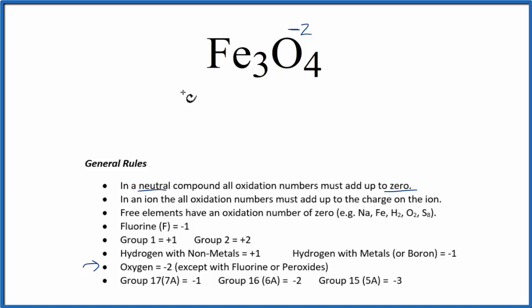We'll do that, we'll call Fe x because we don't know its oxidation number, and we have three of the Fe atoms. So 3x minus 2, that's the oxygen, we have four oxygens. All of that needs to equal zero, because it's a neutral compound.